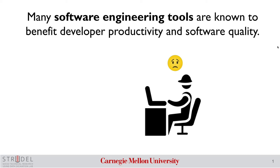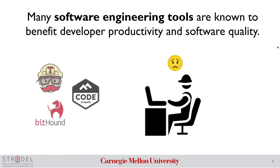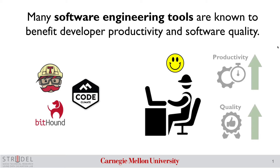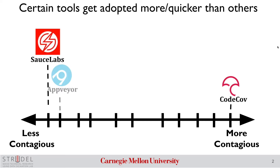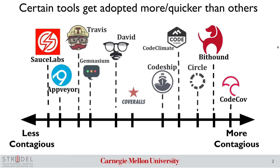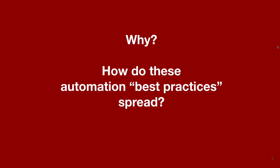Past research has shown that software engineering automation tools have been known to benefit developer productivity and at the same time improving software quality. However, certain tools get adopted more and quicker than the others. But the question is, why does this happen?